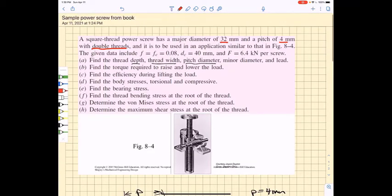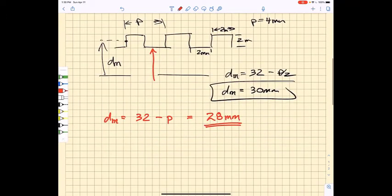We've taken care of just about everything except the lead. The next question is, what is the lead? The lead is going to be equal to the number of threads times the pitch. We've said that we have two threads and the pitch is 4, so the lead is going to be 8 millimeters.